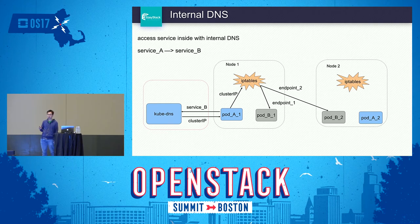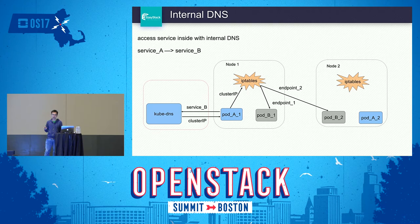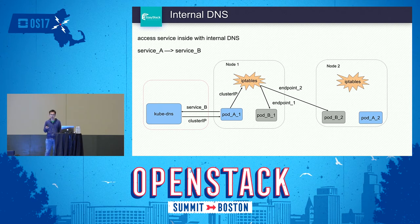There are two scenarios: we need to access a service internally from inside the cluster, or externally from outside. So we need both internal DNS and external DNS. For internal DNS, we use Kubernetes DNS. With Kubernetes DNS, service A only needs to know the name of service B to get its cluster IP. Within the node, the cluster IP will redirect to the endpoint of the service through DNAT rules in iptables.